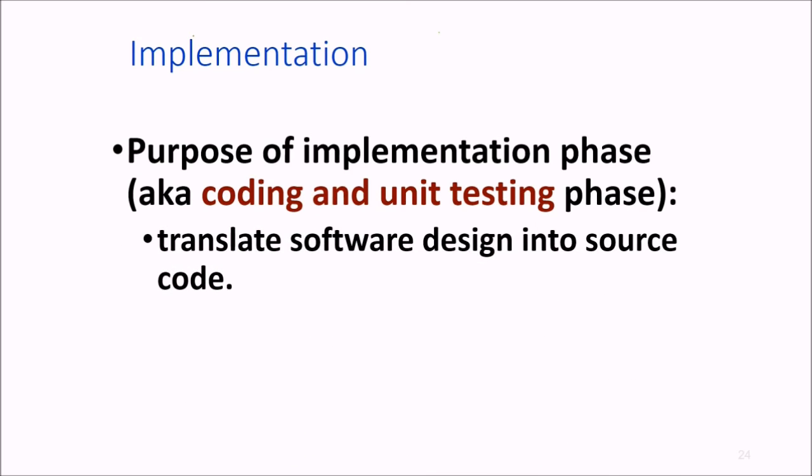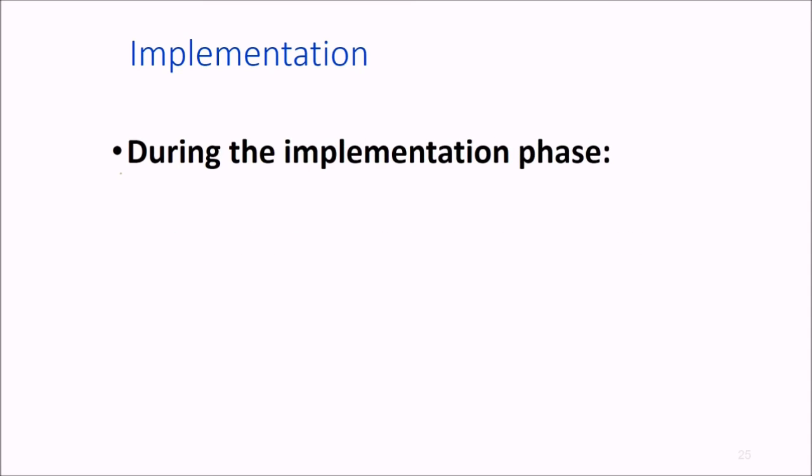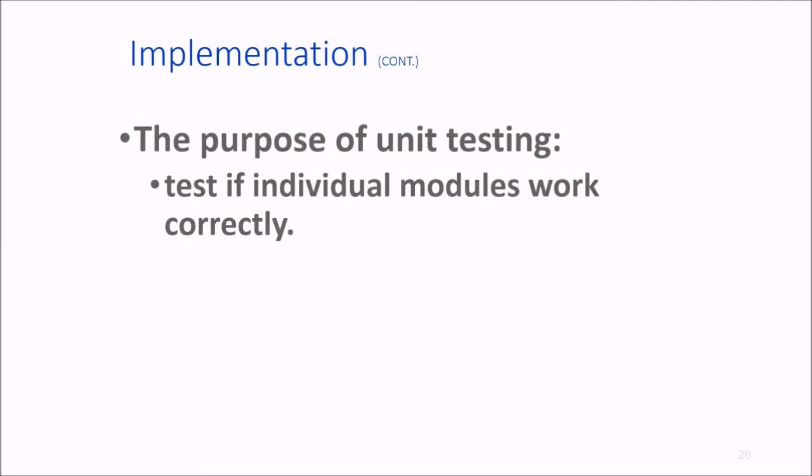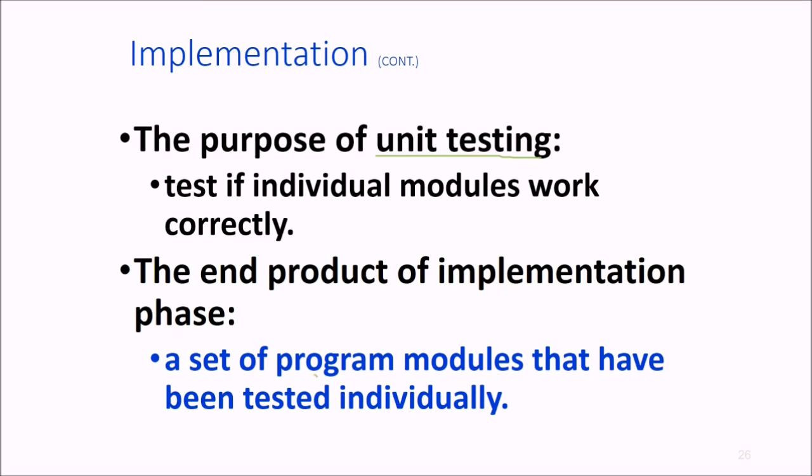Then we arrive at implementation part, also known as coding and unit testing phase. Here we try to transfer our design into actual source code. Translation of design into source code is what we call implementation. In this phase, each module of design is actually programmed or coded. Then each module is unit tested as standalone unit and debugged. Each module is to be documented. We test if individual modules work correctly independently. The end product of the implementation phase would be the set of program modules that have been tested individually.